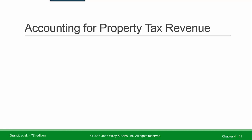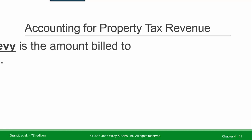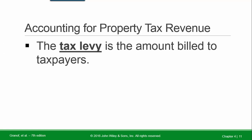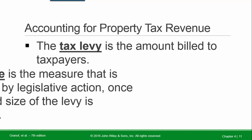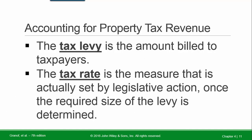Accounting for property tax revenue: the tax levy is the amount billed to taxpayers. The tax rate is the measure actually set by legislative action — the elected body — once the required size of the levy is determined.